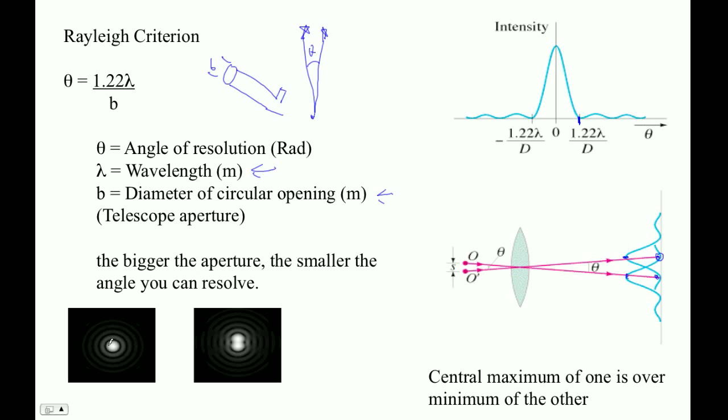Here's a picture. These are two stars that are totally overlapping. These stars are separated by the Rayleigh criterion. You could argue that maybe you could resolve them if they were closer, but this is generally accepted.